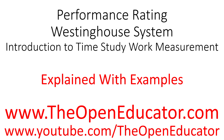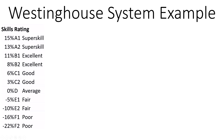The Westinghouse rating system for performance rating is a little bit more involved than the speed rating system. It uses four different parameters that are added together to get the final performance rating for the task.